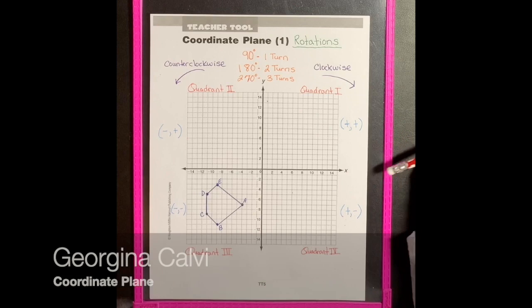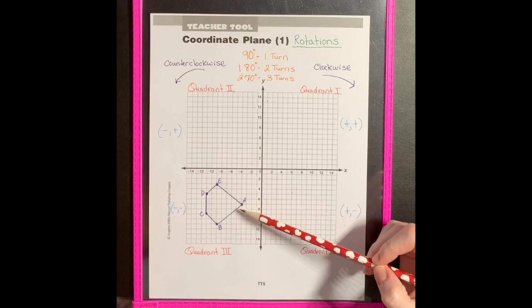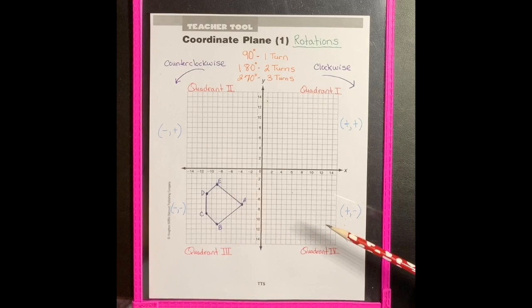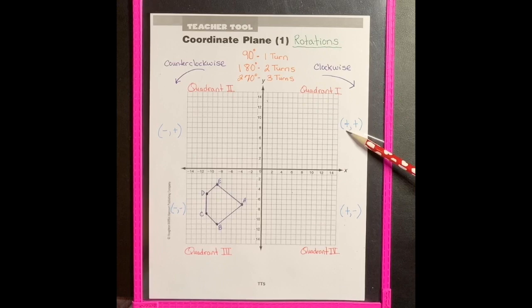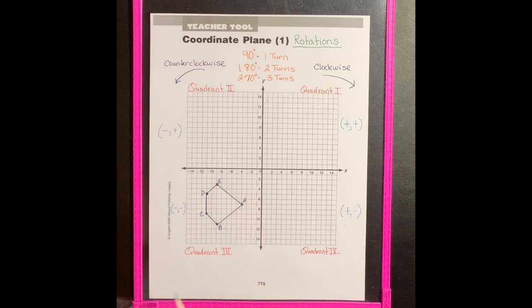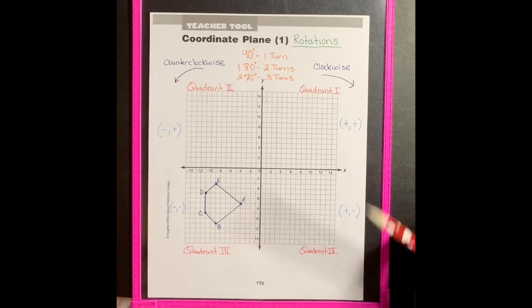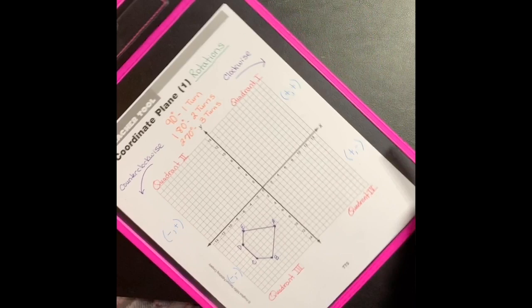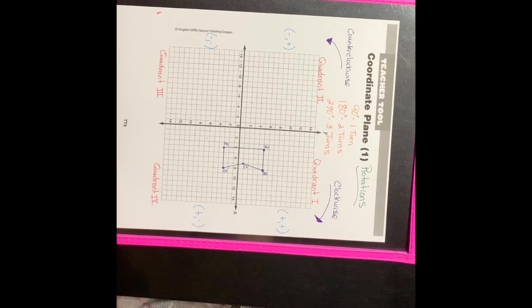Hi class, it's Mrs. Calvi. I wanted to do a quick tutorial on rotations, because that is one of the hardest transformations to grasp. I have my figure plotted on my coordinate plane — it's in quadrant three. Just a couple items of review: quadrant one leads to quadrant two, which leads to quadrant three, then quadrant four. Any point in quadrant one is positive-positive; quadrant two is negative-positive; quadrant three is negative-negative; quadrant four is positive-negative. I have my figure graphed in quadrant three. A 90-degree rotation is one turn, a 180-degree rotation is two turns, and a 270-degree rotation is three turns.